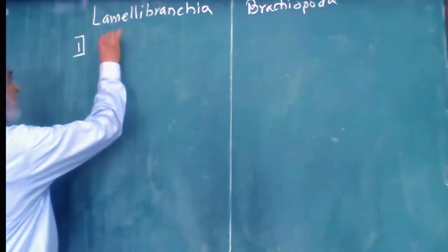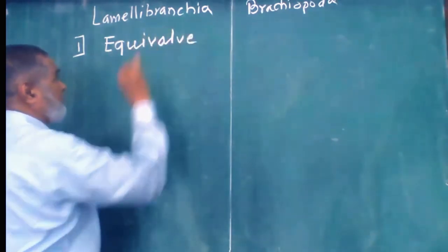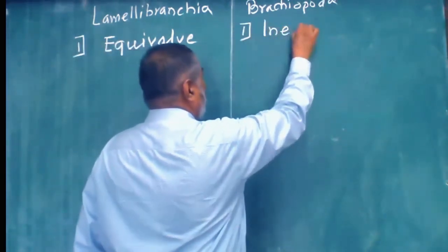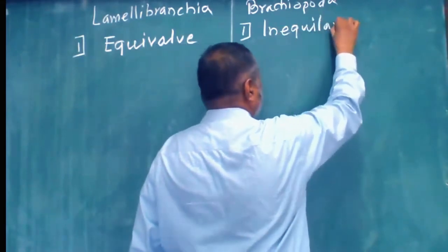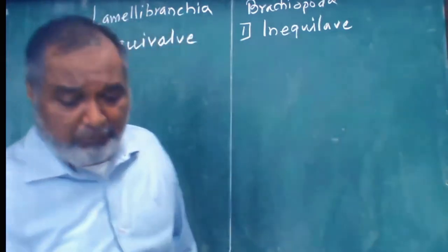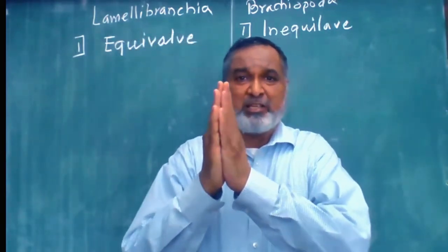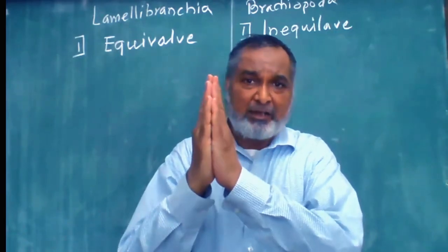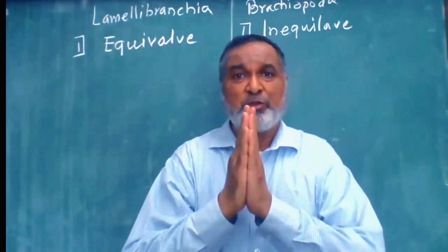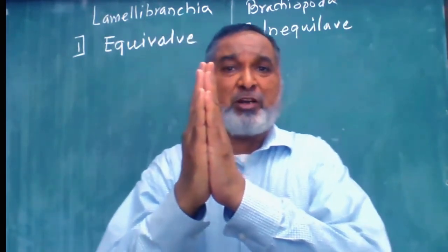The first important point: the lamellibranch is equivalve, whereas the brachiopod shell is inequivalve. To understand these terms, think of your two hands — you have a left hand and a right hand. If you join them, they perfectly match both palms. This is what we call equivalve. The left valve and right valve, when joined, form the lamellibranch — they match exactly.